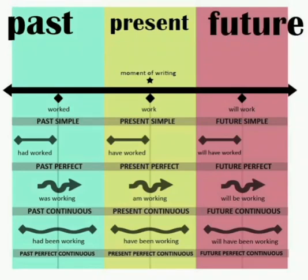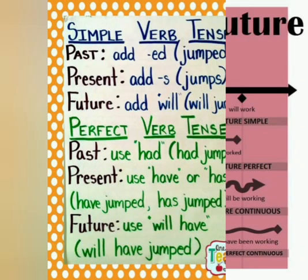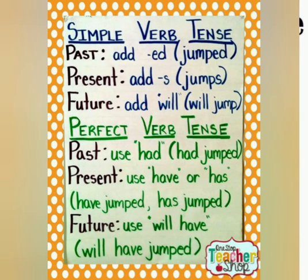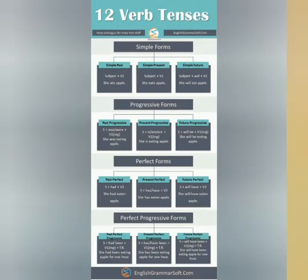Tenses are very important, for they help us to identify whether the incident occurred in the past, present, or future. There are three types of tenses in grammar: past tense, present tense, and future tense.